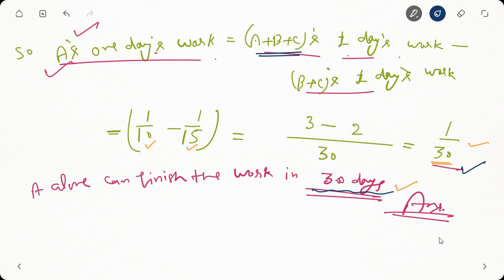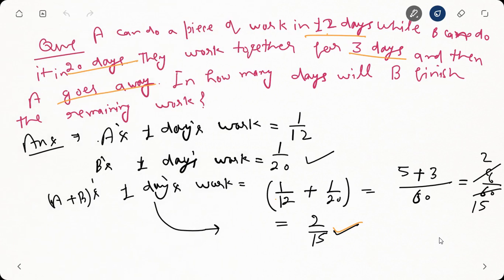Similarly, to find the time required for B to complete the task alone, we take one day work of A plus B plus C minus one day work of A and C. For C alone, we take one day work of A, B and C minus one day work of A and B. In this way we can find the one day work of each person and then determine the total time required for each to complete the whole task independently.